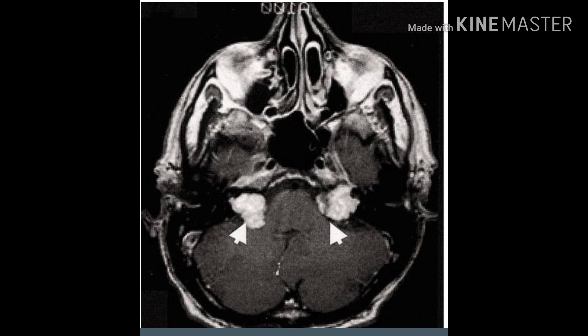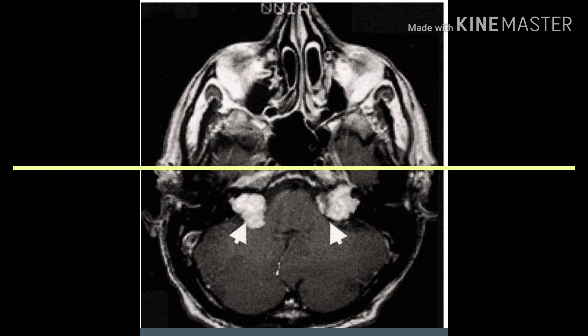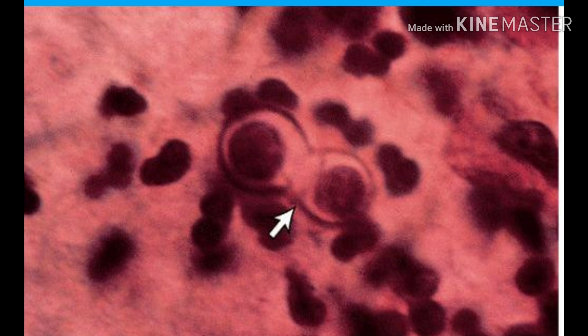Here you can see bilateral schwannoma which is usually associated with neurofibromatosis type 2. Other findings classically associated with neurofibromatosis 2 are juvenile cataract and two tumors: meningioma and ependymoma. So the mnemonic is two ears, two eyes, and two tumors — bilateral schwannoma, bilateral juvenile cataract, and the two tumors meningioma and ependymoma.